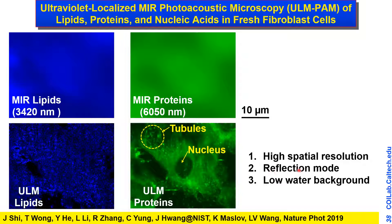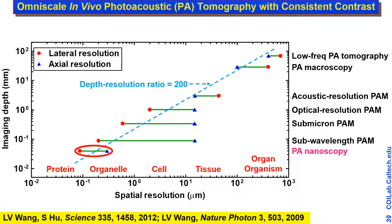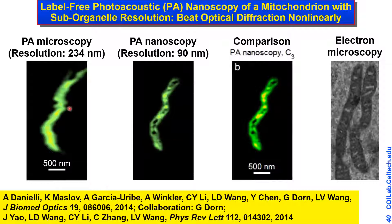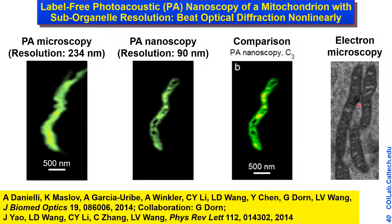We can image fresh samples in reflection mode because photoacoustic signals propagate in all directions, and the water background is suppressed since the signal is limited to the UV focal spot. We can push the resolution even further to the organelle level. With the highest numerical aperture, diffraction-limited resolution is 234 nanometers. Using non-linear photoacoustics, we push the resolution to 90 nanometers. Looking at a single mitochondrion, we can resolve some of its internal structures.